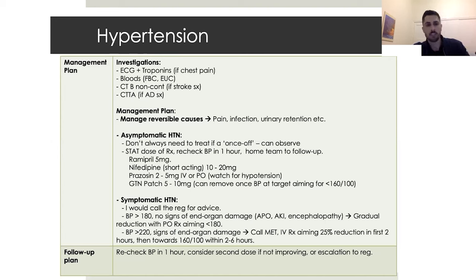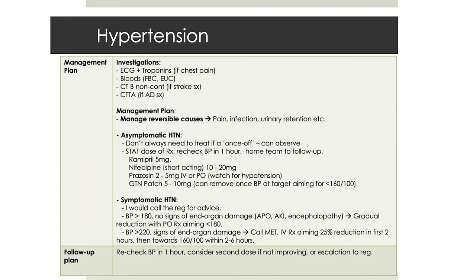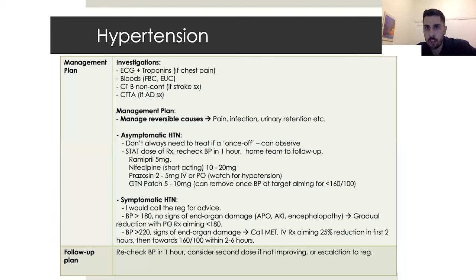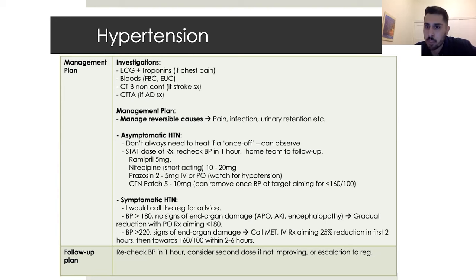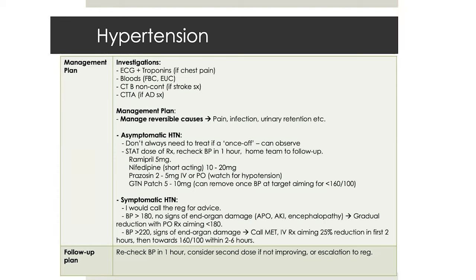Any questions about hypertension? A participant asks about end organ damage for clarification. Focal neurological deficits would indicate brain as end organ damage, but also APO indicating the heart is failing; on bloods, a new AKI or very low urine output would indicate renal failure. So broadly the brain, heart, and kidneys are the systems to look at as indicators for end organ damage.